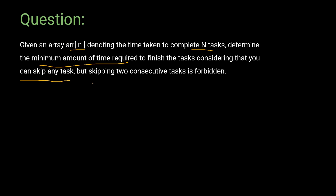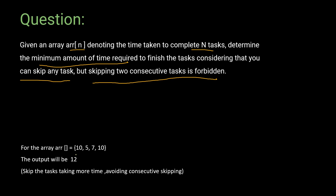Each of the n tasks has a different time duration to complete, and tasks must be completed in sequence. In short, given an array ARR of size n denoting the time taken to complete n tasks, we have to determine the minimum time required, considering we can skip tasks but skipping two consecutive tasks is forbidden. For example, with array [10, 5, 7, 10], the minimum time is 5 + 7 = 12.